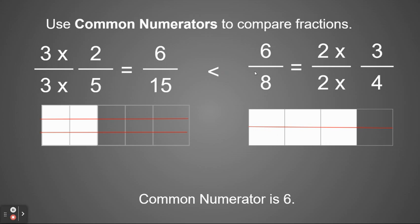So when I'm comparing my numerators and I'm finding common numerators, the difference is with the denominator, the smaller the denominator, the bigger the piece. So it's a little bit tricky on that.